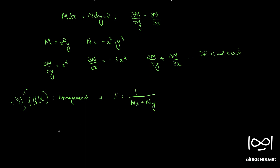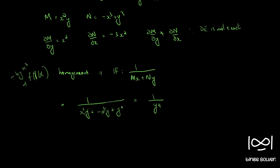So that is equal to 1 by Mx plus Ny. Mx becomes x cubed — M is x squared y, so Mx is x cubed y. N is minus x cubed plus y cubed, so Ny becomes minus x cubed y plus y to the 4th. So x cubed y and x cubed y get cancelled, giving us 1 by y to the 4th. So our integrating factor is 1 by y to the 4th.